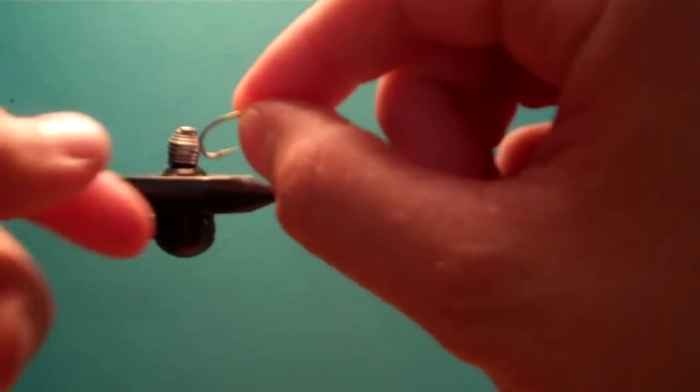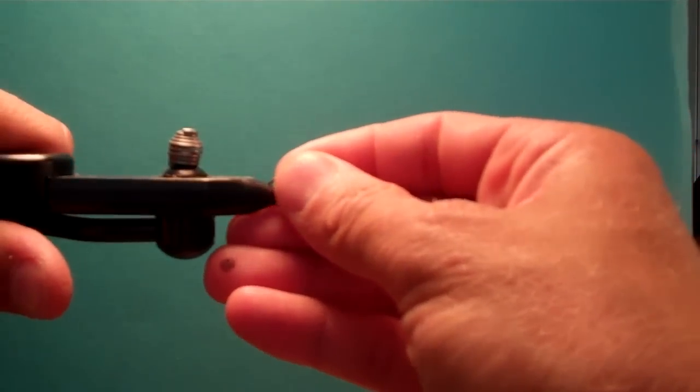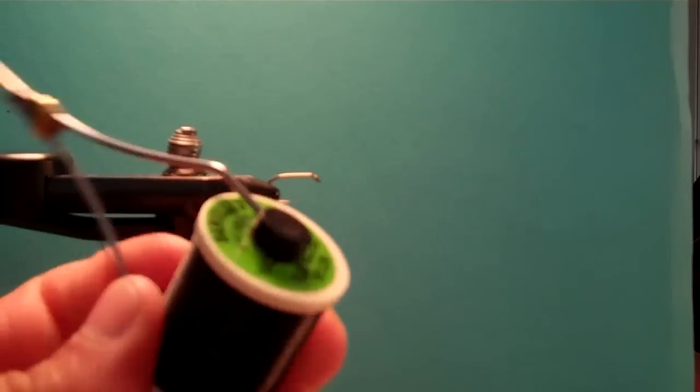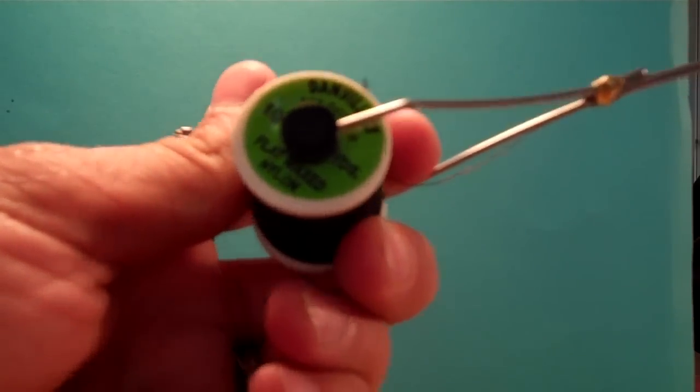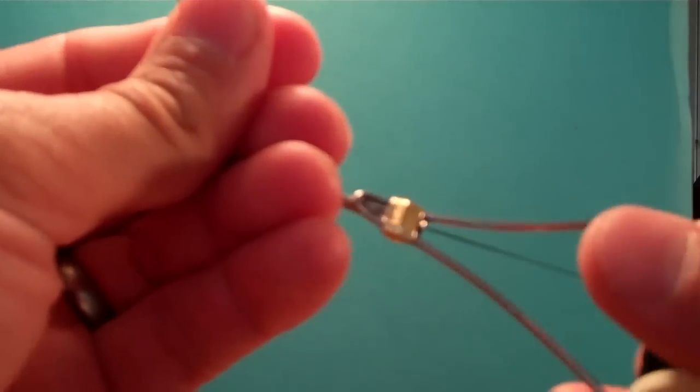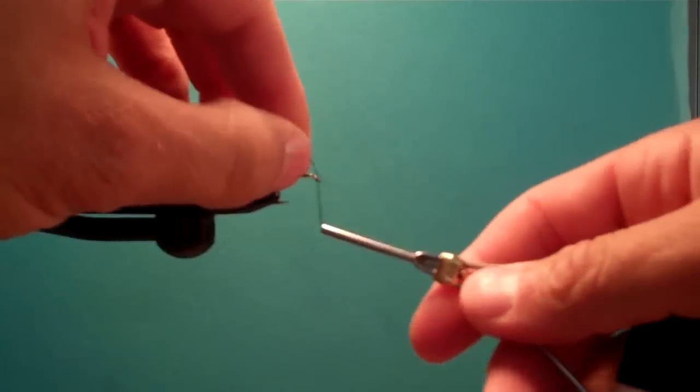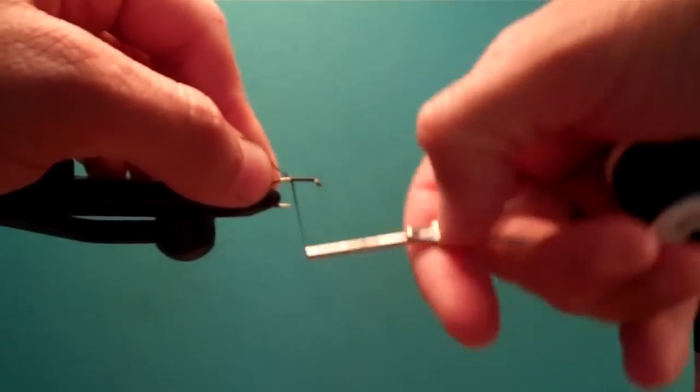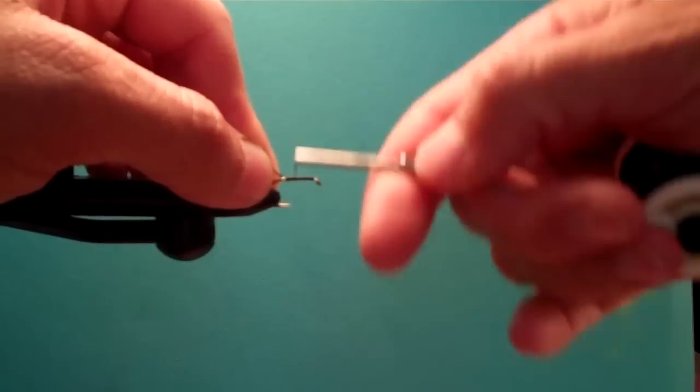I'm going to use a size 8 hook. Put it in the regal vise because it holds it. Take Danville flat waxed nylon and start a body wrap. I'm not going to put anything other than thread down for this body.